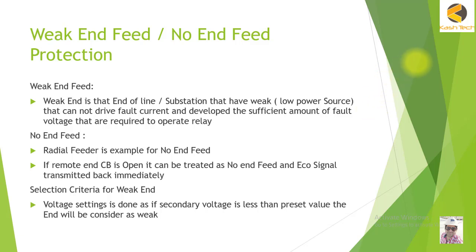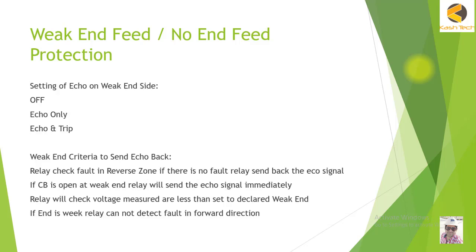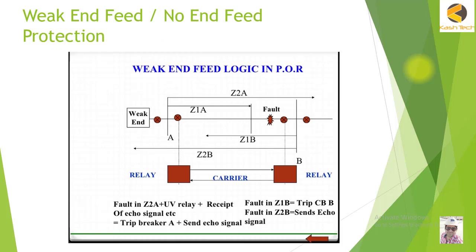The weak infeed scheme is used on networks where one feeding station has a very small generator or no generator, and another station has a very strong generator. For example, one side may have a generator of 1 MW and the other side one of 1 kV — where there is not enough power to feed fault current and the relay is not able to operate. We will learn how to protect the line and interrupt the fault in this case, including the echo logic used in weak infeed protection.